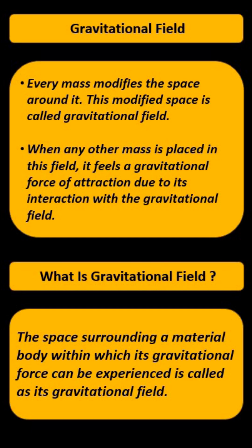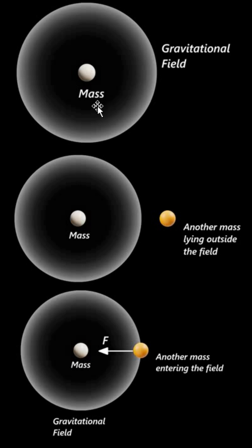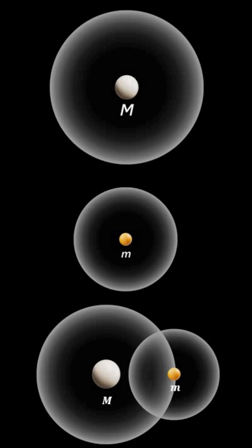When any other neighboring object or mass enters that field, or is present inside that field, it experiences the gravitational pull — the gravitational force. This interaction of gravitational fields of two objects causes gravitational attraction. Gravitational field is the space surrounding a material body within which its gravitational force can be experienced. Every mass produces a gravitational field, and when another object enters that field it experiences a gravitational force of attraction. So gravitational force of attraction is basically the interaction of gravitational fields of two masses.